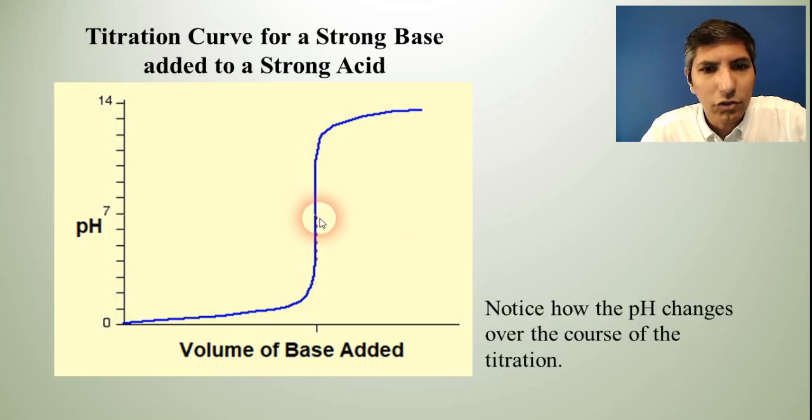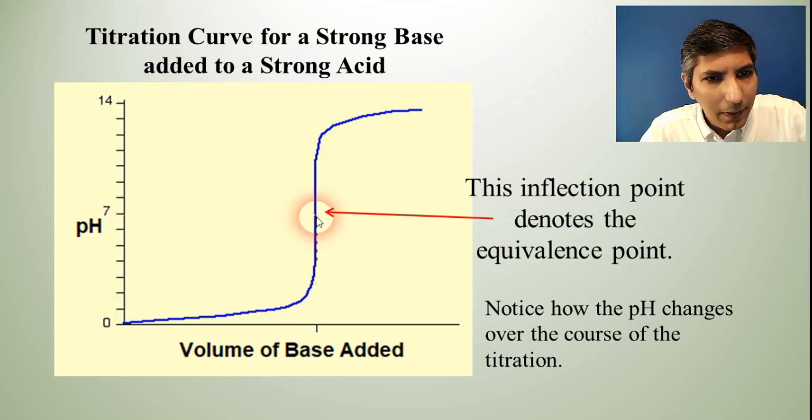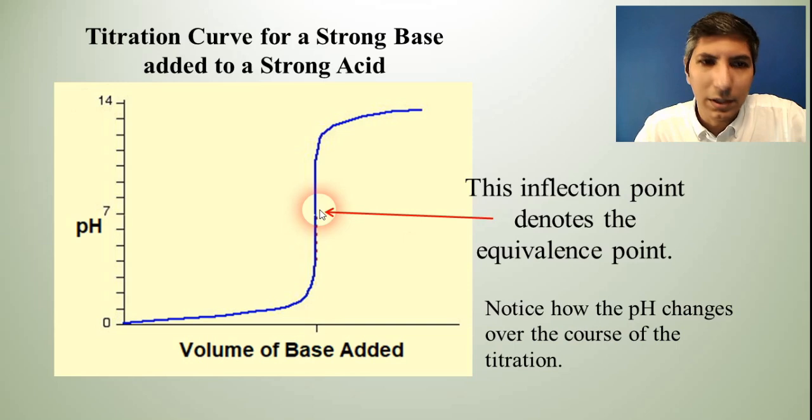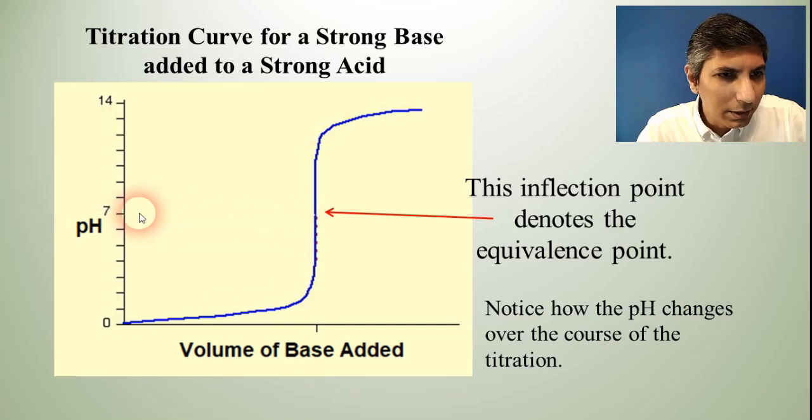Well in that curve, notice there is a point kind of in the exact middle point of that S. That's called the inflection point. And that inflection point in this titration curve denotes the pH of the equivalence point.